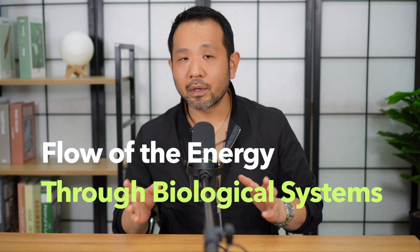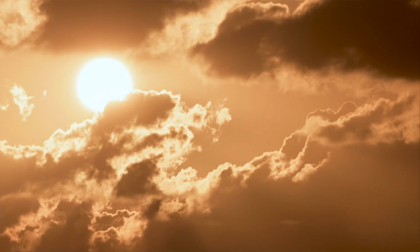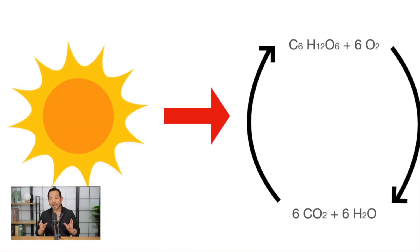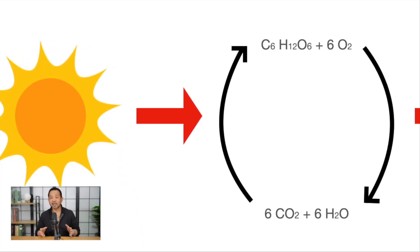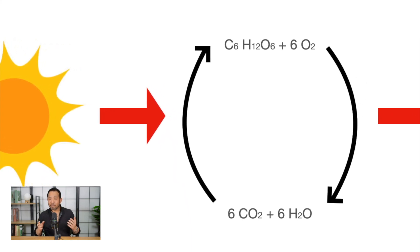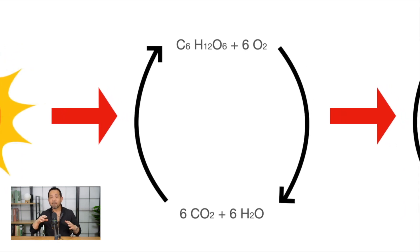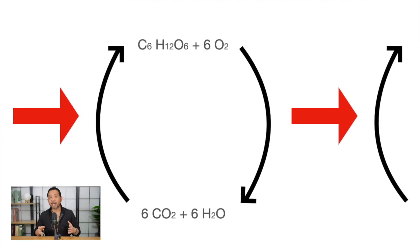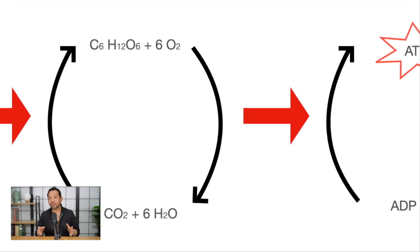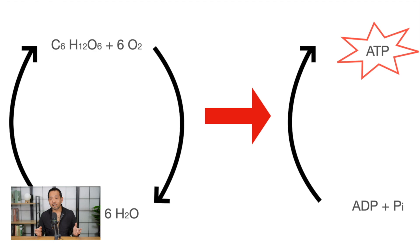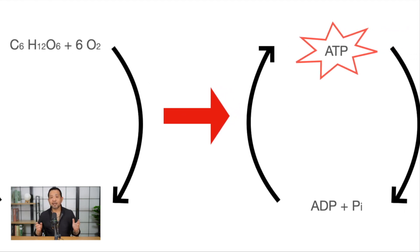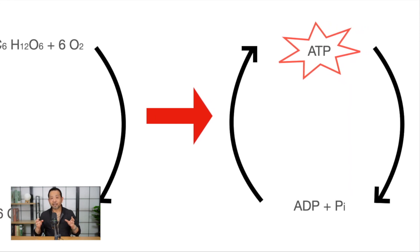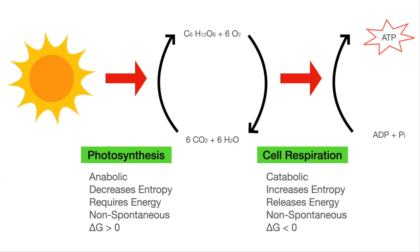Let's talk about the flow of energy through biological systems in a simplified way. The sun provides the majority of energy needed by living systems, releasing energy through nuclear fusion that arrives as electromagnetic radiation. Plants take carbon dioxide and water, using that solar energy to create the complex molecule glucose — an anabolic reaction. Plants and animals that eat plants then break glucose back down into carbon dioxide and water, performing a catabolic reaction that releases energy. That released energy is used to create adenosine triphosphate (ATP), the currency of energy within the cell, from adenosine diphosphate (ADP) and inorganic phosphate — performing another anabolic reaction.